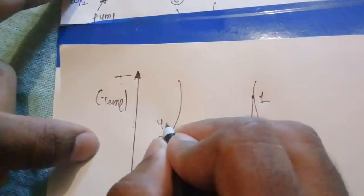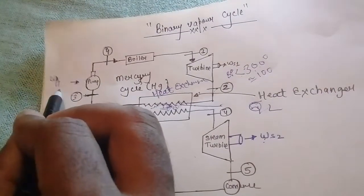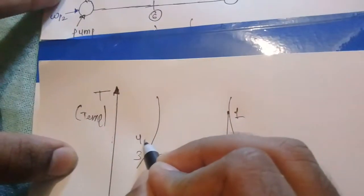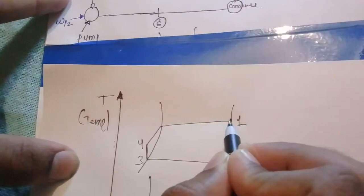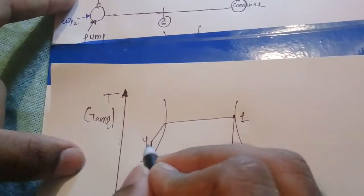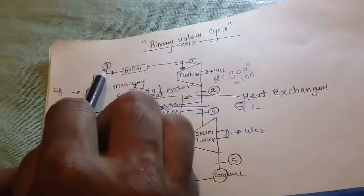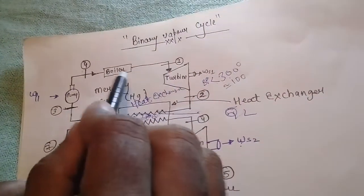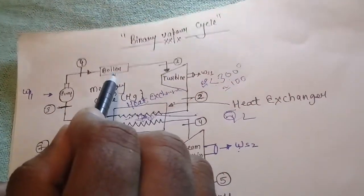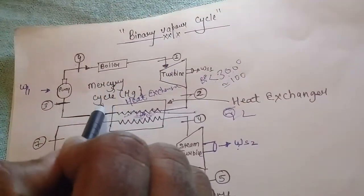From 3 to 4 is the pump work, which is represented by WP1 here. And from 4 to 1 — 4 is here and 1 is here — 4 to 1 is the boiler work of the mercury cycle.